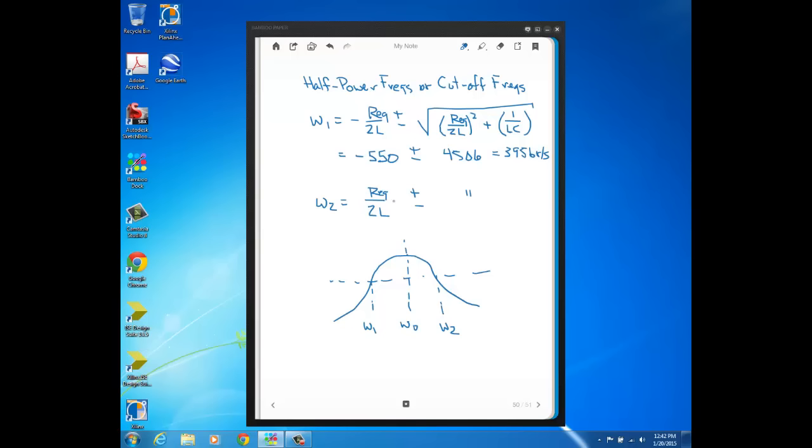And then omega 2, you're going to have still 550, but now it's plus. There's no minus sign in front for this root. And then plus or minus, again, it's the same radical. That's what this two dashes mean, the same as what we have up there. So it's going to be 550 plus 4506 because the 550 minus the 4506 gives us a negative frequency, which again we ignore because there's no physical meaning to negative frequency. So this gives us an upper cutoff of 5056 radians per second.